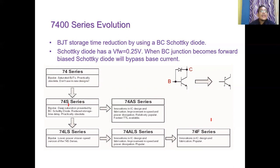Then 74S — S for Schottky — uses bipolar transistors where deep saturation is prevented by a Schottky diode, and this is used in many applications. Then 74LS series: TTL with LS standing for low power Schottky. All the practicals you perform use the 74LS series. Then 74F is called the fastest one.